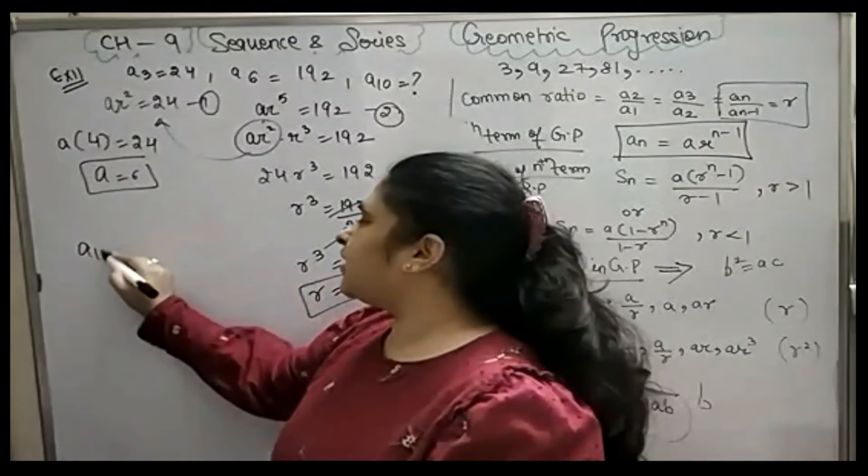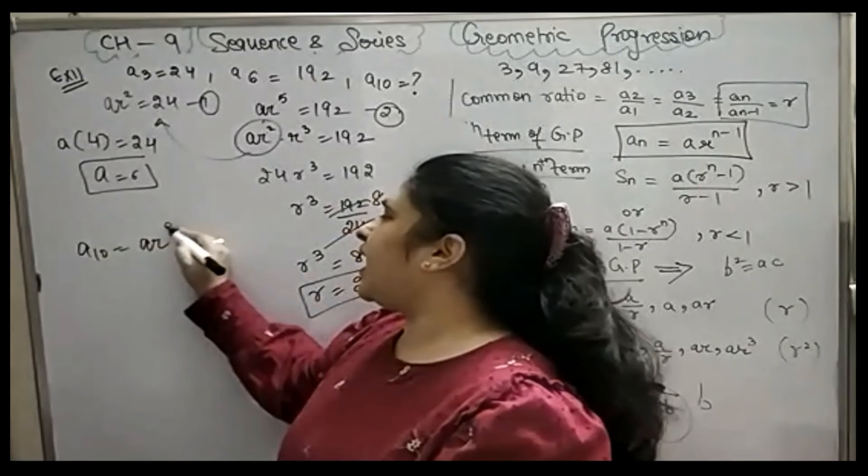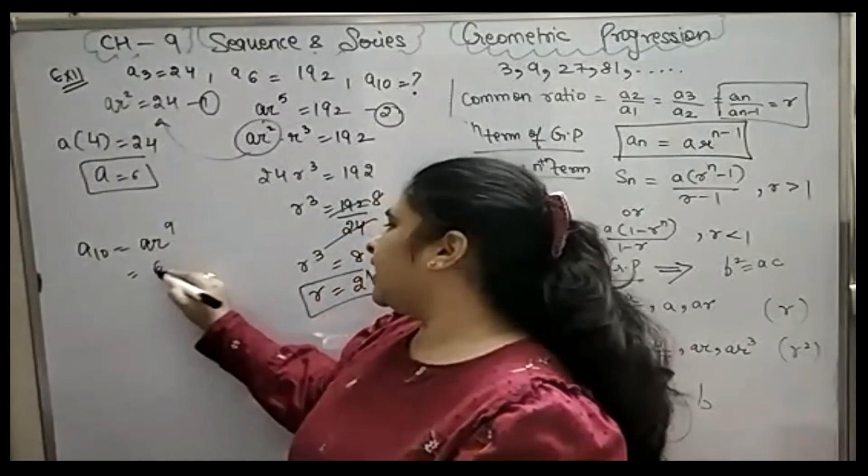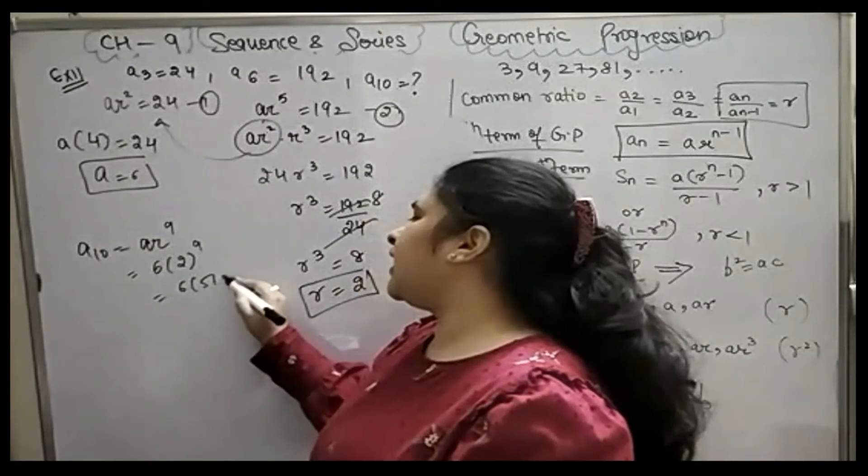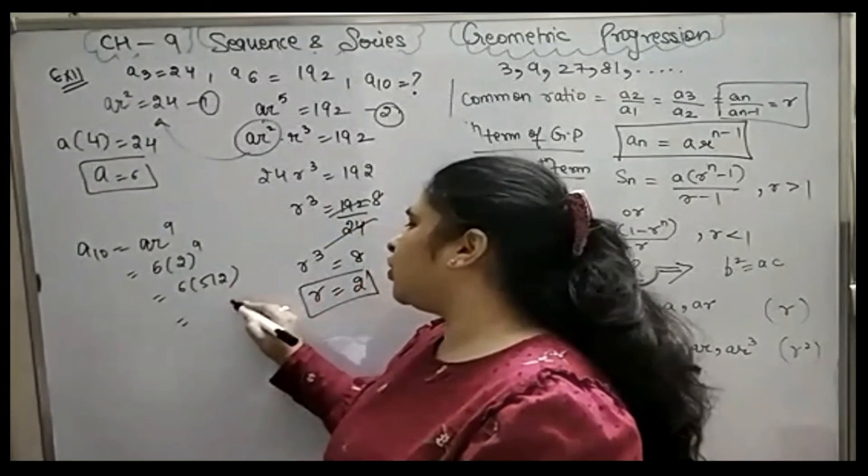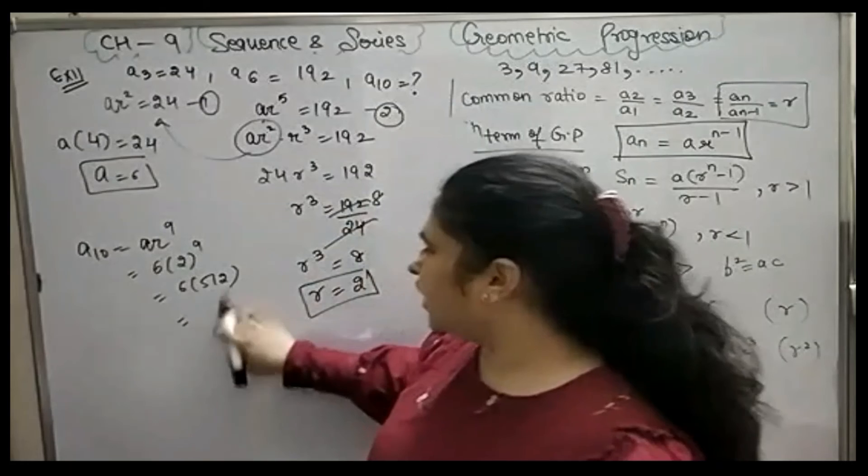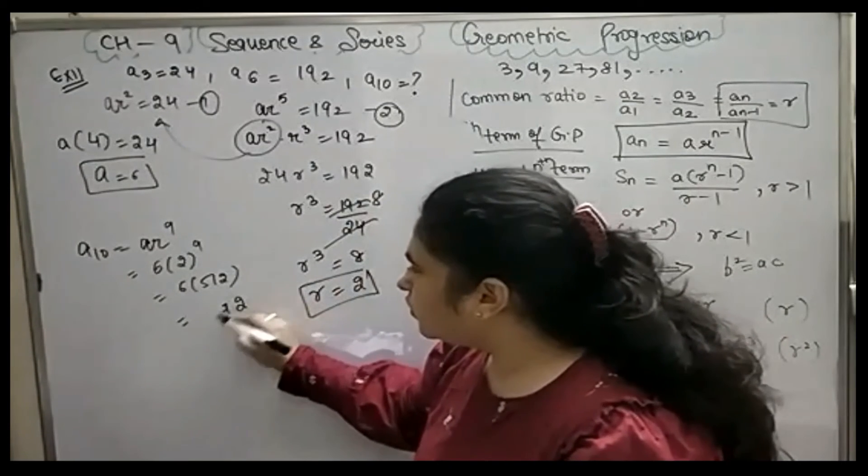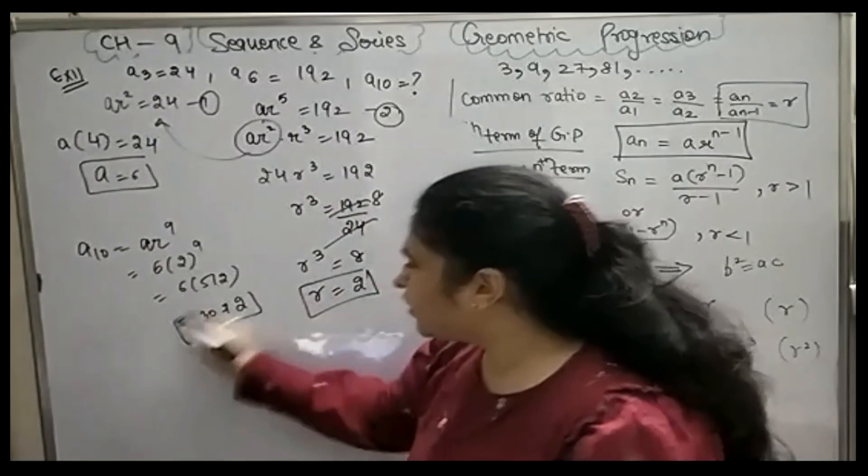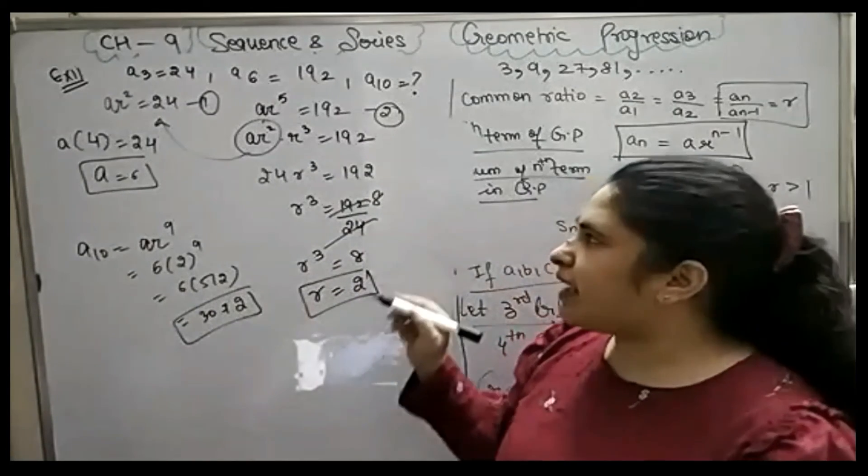What will my 10th term be? That is AR power 9. That is 6 into 2 power 9. Now calculate it. It's up to you. Multiply to get the answer. And you clear example number 11.